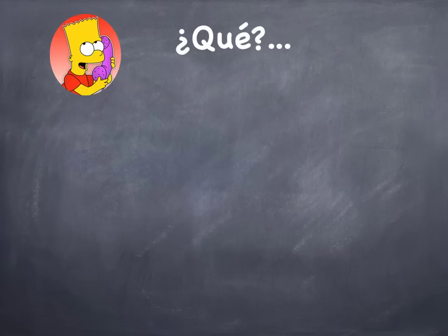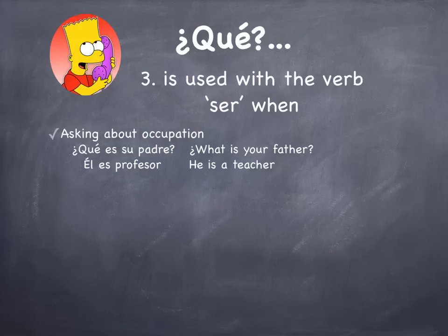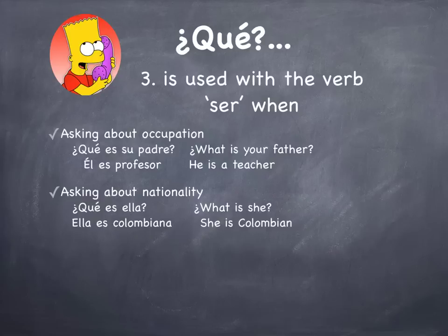The third occasion to use Qué is with the verb ser, asking about occupation, nationality, or religion. For occupation: ¿Qué es su padre? — Él es profesor. — What is your father? He's a teacher. For nationality: ¿Qué es ella? — Ella es colombiana. — What is she? She's Colombian.